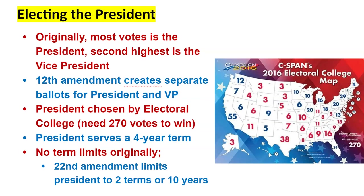The 12th Amendment changed the Electoral College process by separating the ballots, making it clearer who electors were voting for — president versus vice president. This meant candidates ran as a ticket. So now we vote for a president and vice president, when really we're voting for the electors behind those candidates. The Electoral College chooses the president — it is not the American people directly, though we love to think we are voting for them.